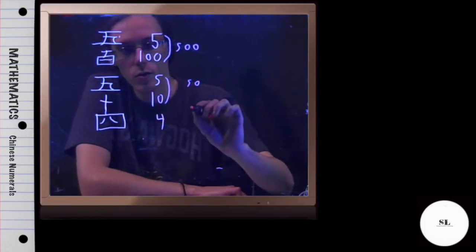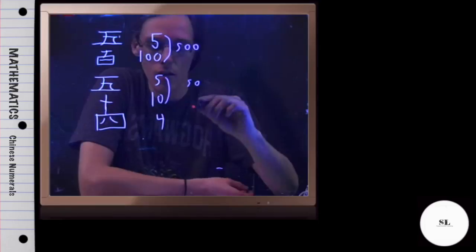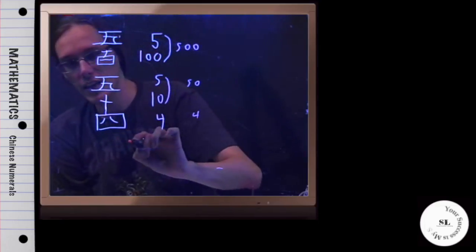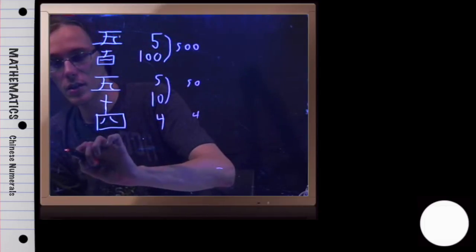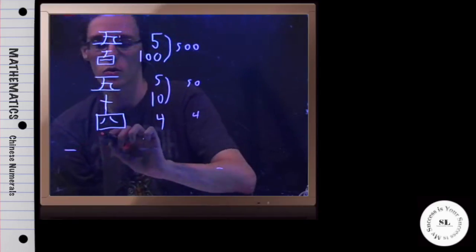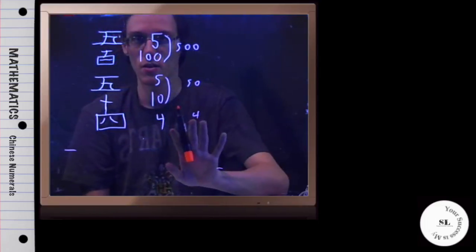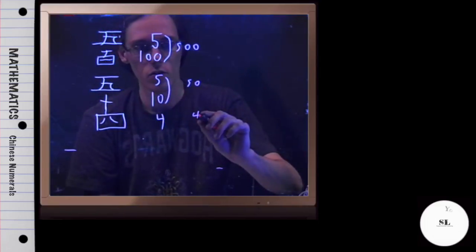And this right here would be 4 times 1, which is 4, but you would never actually write the Chinese symbol for 1. Just as a point of information, that's the Chinese symbol for 1, but you would not put it down here. Once you get to the ones group, you just write how many you need, so 4.